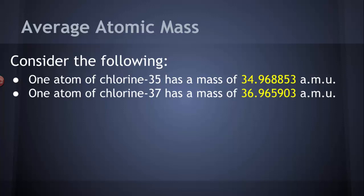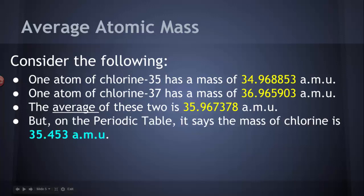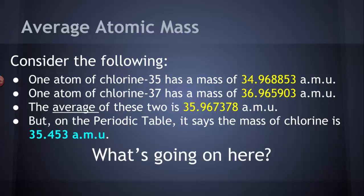Consider this, an atom of chlorine-37 has a mass of 36.965903 AMU. Again, close to 37. Now, if I average those two together, I get 35.967378 AMU, but that is not what's listed on the periodic table as the average atomic mass. On the periodic table, the average atomic mass says 35.453 AMU. So, what the heck is going on? How is it an average?